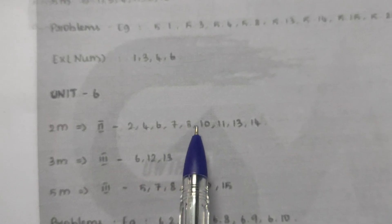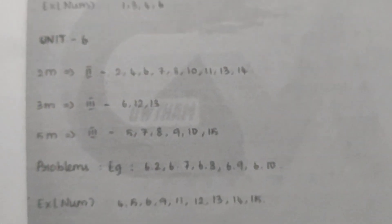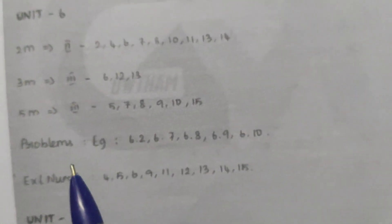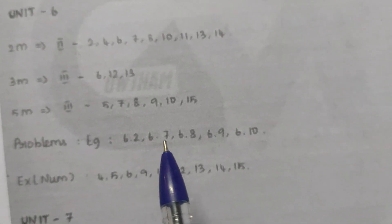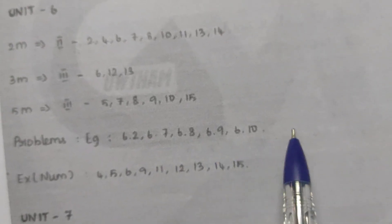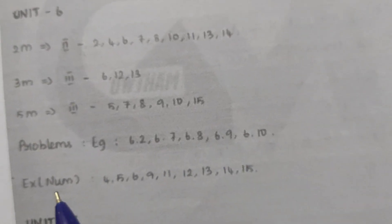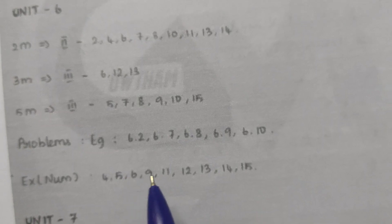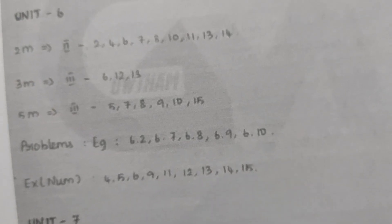Unit 6: 2-mark questions — 2, 4, 6, 7, 8, 10, 11, 13, 14. 3-mark questions — 6, 12, 18. 5-mark questions — 5, 7, 8, 9, 10, 15. Problems: 6.2, 6.7, 6.8, 6.9, 6.10. Example numbers: 4, 5, 6, 9, 11, 12, 13, 14, 15. And unit 7.